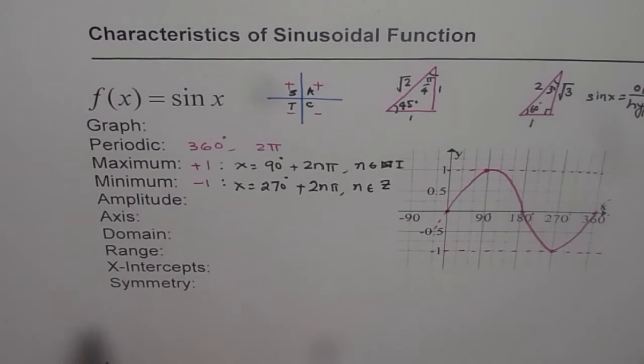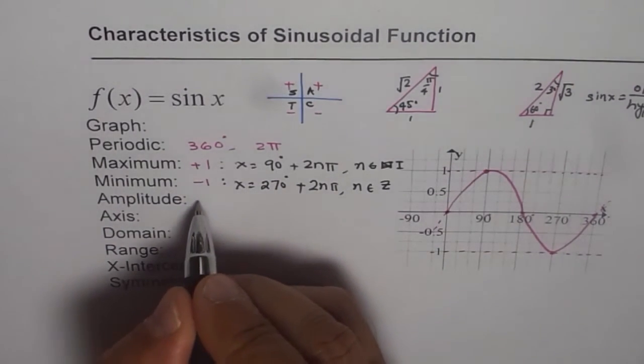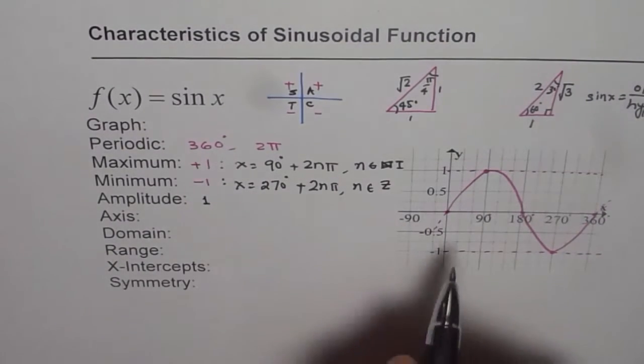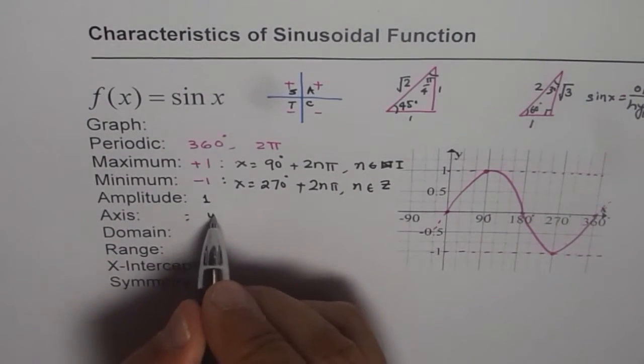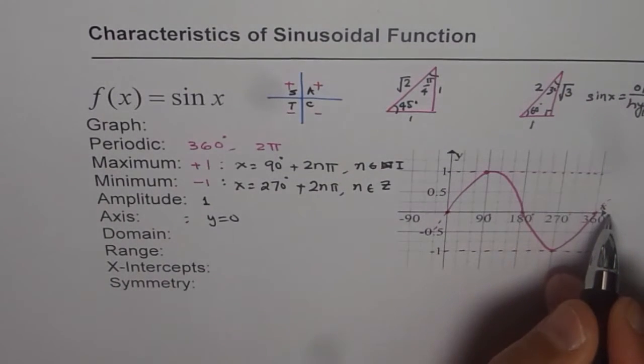Now amplitude of the function is from the axis to maximum. So the amplitude is 1. Axis is y equals to 0. So this is the axis, which is y equals to 0.